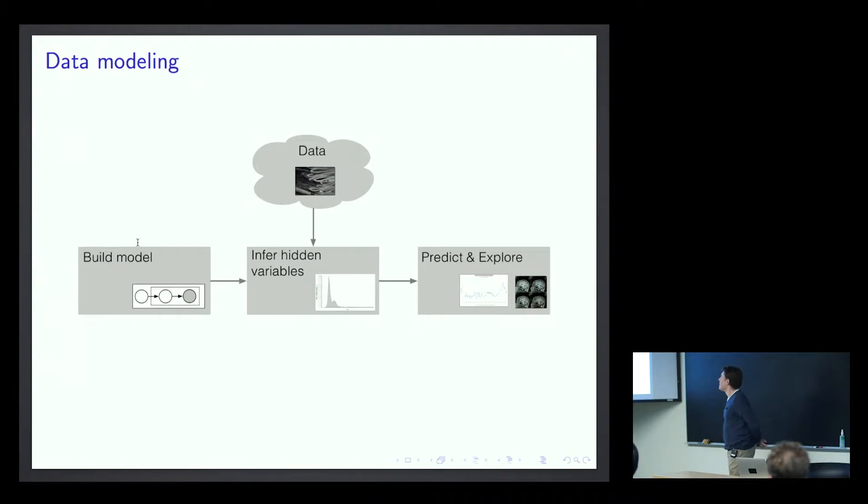So here's the general pipeline: you have data and you want to build a model, so you define your model, you then take the data and feed both of those into some inference algorithm to learn the model parameters, and then you use that for prediction or exploration or whatever you're interested in. Some keywords here: I focus mostly on Bayesian models, Bayesian modeling, and here I'm also interested in developing variational inference, which is like optimization meets Bayesian inference. We heard a little bit about that in the last talk.